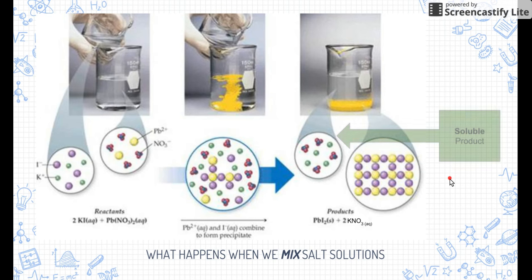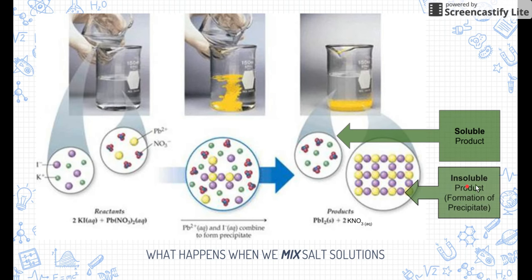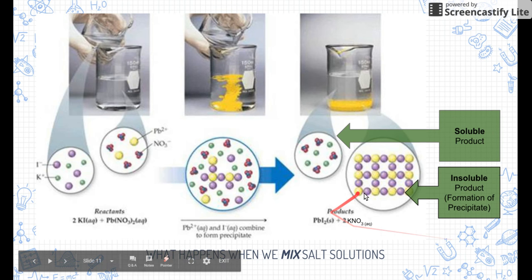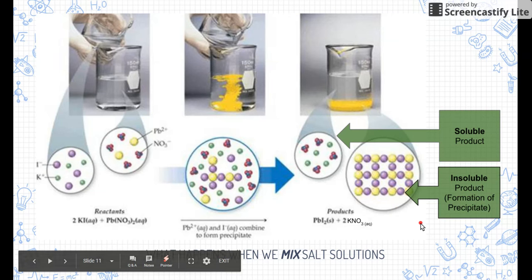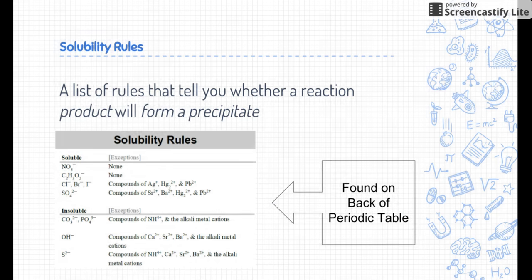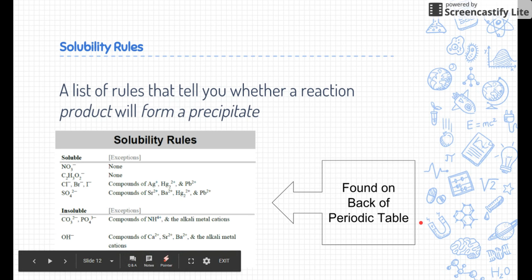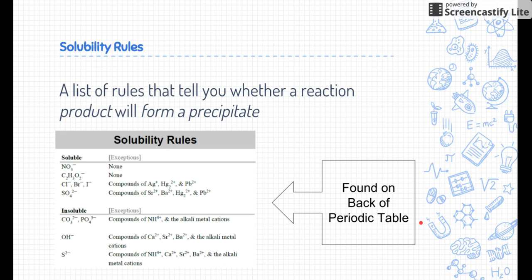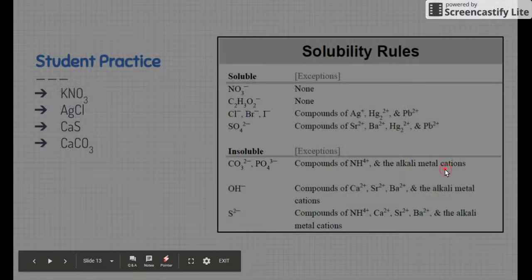But how do we predict that's going to happen? So there's our soluble product and our insoluble product. Remember, the insoluble product is basically a driving force—it's a formation of a precipitate. In order to predict whether a product is going to be soluble or insoluble, we use something called solubility rules. In fact, I might pause the video right now, pull out your periodic table, and look on the back. You should have this list of solubility rules on the back of your periodic table. This is just a list of rules that tell you whether a reaction will form a precipitate or be soluble or not.